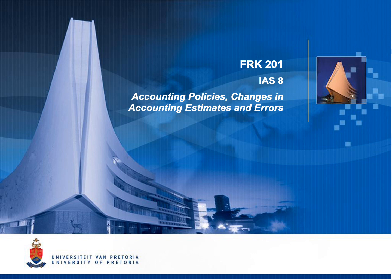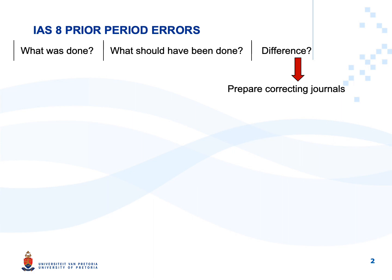IAS 8 accounting policies, changes in accounting estimates and errors. An error can occur when applying any accounting standard — for example, an error could have occurred when you applied IAS 16, IAS 40, or IAS 36. The method we suggest you follow when a question deals with a prior period error is to first find out what was done — what did the entity do incorrectly, how did they account for that specific item? Next, you need to know your accounting standards well to determine what should have been done — the correct accounting treatment in terms of IFRS. There is a difference between what was done and what should have been done, and accounting for that difference means you are correcting the error, which we usually do by preparing correcting journals.